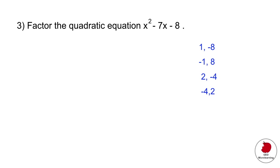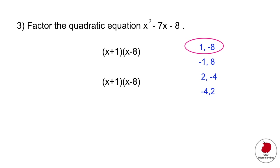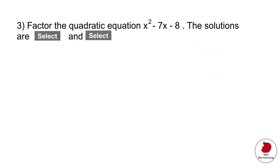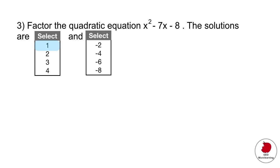Step two for our problem: these two numbers have to add up to minus 7. Going through the list, 1 plus minus 8 equals minus 7 — so that's the factored solution. You would write the factors as (x + 1)(x − 8).